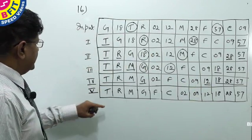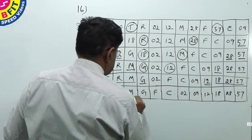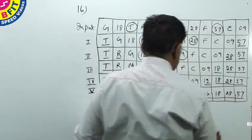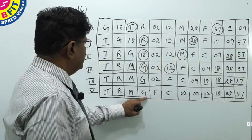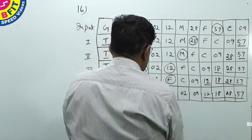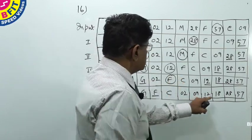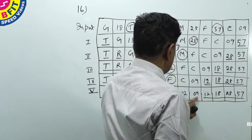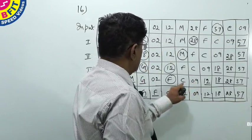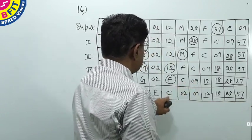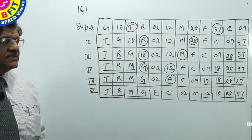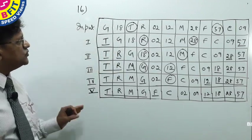In Step 5, we inherit T, R, M, G on the left and 12, 18, 28, 57 on the right. Then F comes next, followed by C. On the number side, 09 comes next and then 02. The arrangement is now complete. This is how the machine works.